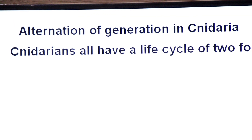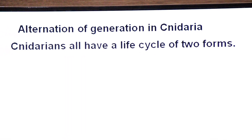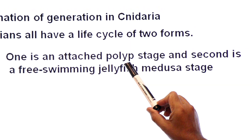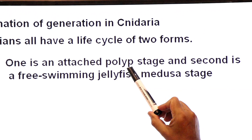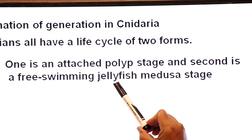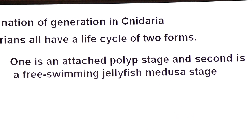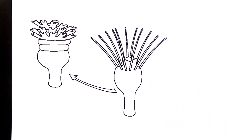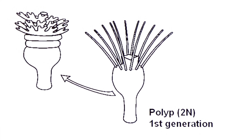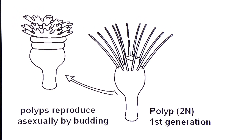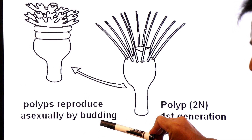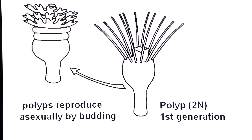The cnidarian life cycle has two forms. The first is the attached form, attached to the substratum, called the polyp stage. The second is the free-swimming jellyfish-like stage called the medusa stage. The polyp is a diploid, attached stage — this is the first generation. Polyps reproduce asexually by budding, where a bud is an outgrowth from the parent body.